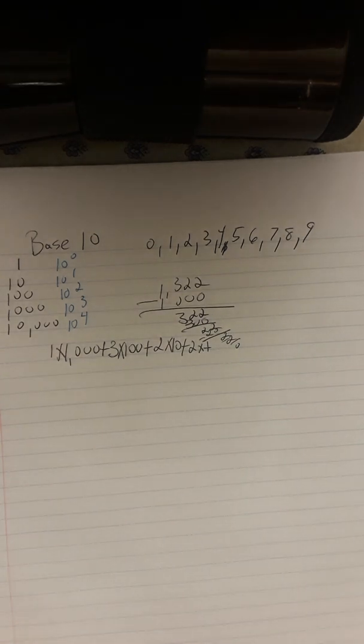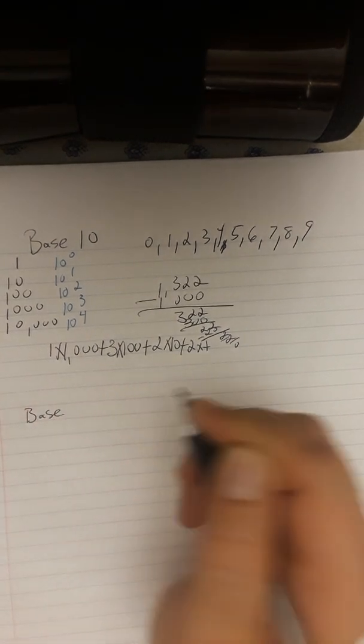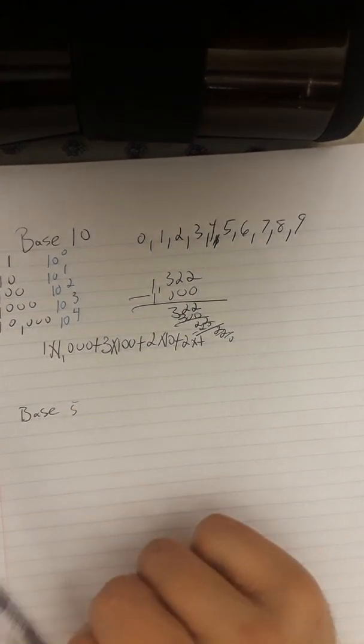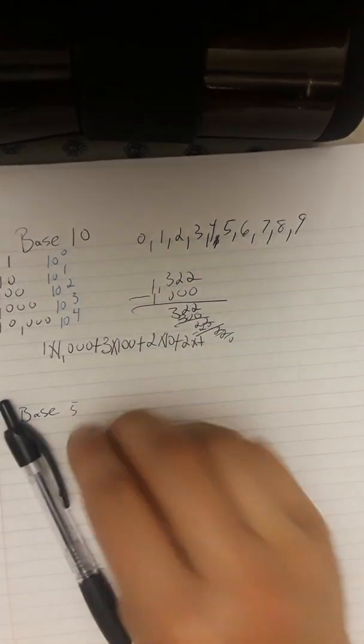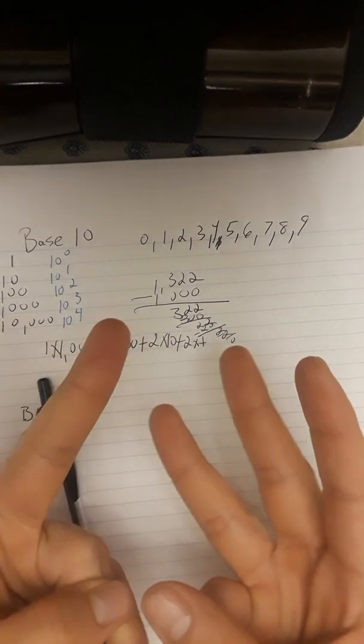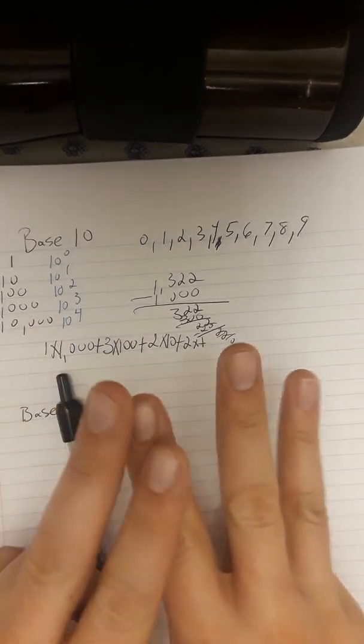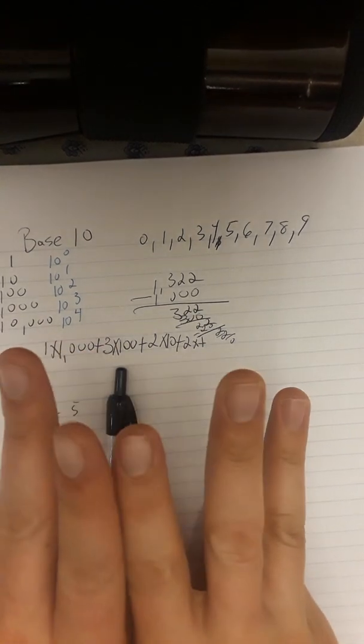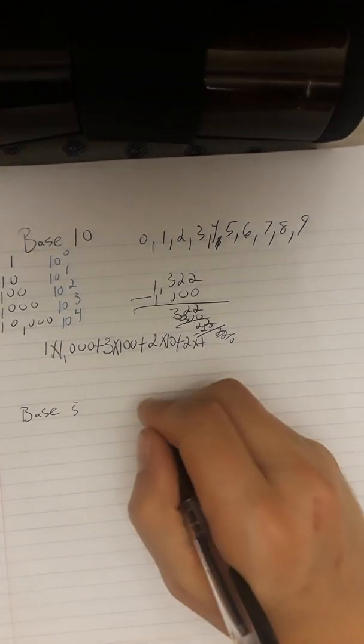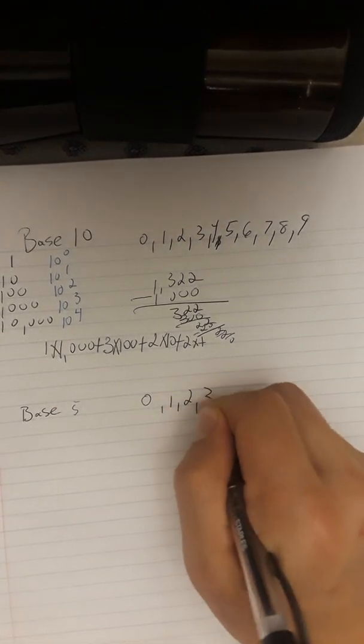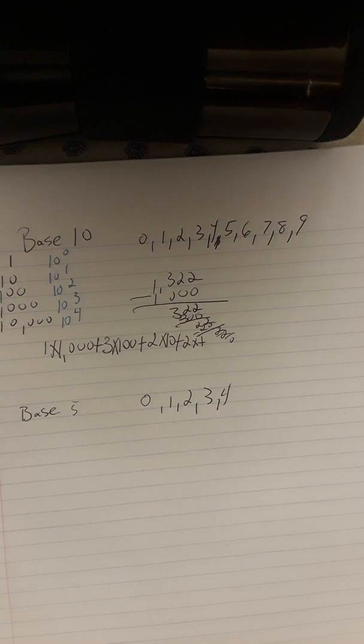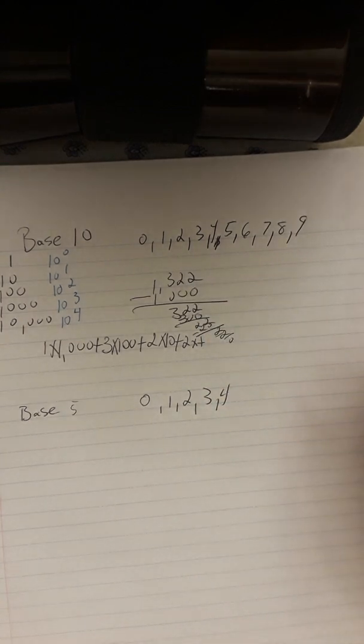We're going to head off to base 5. So before I told you, I kind of bragged that I have all 10 of my fingers. If we were a different kind of creature, some sort of mutant or maybe an alien, maybe we'd have 5 fingers. So with 5, we can only go to 5 digits. Those digits are going to be 0, 1, 2, 3, 4. Nope! There's no 5 in base 5, just like there's no 10 in base 10. So with base 5, we're going to make this number into base 5, 1,322.